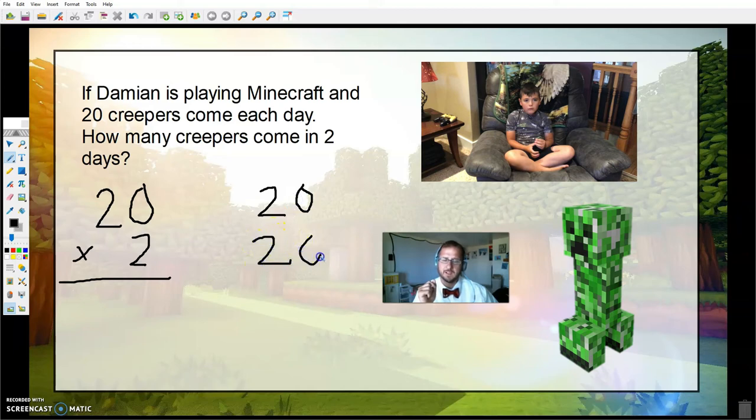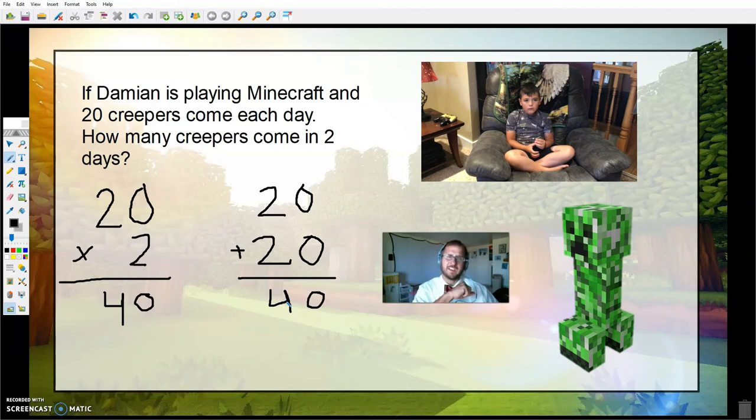We could do twenty multiply two, and because multiplication is also repeated addition, we could do one day of twenty and two days of twenty. And both of those are going to get us to the same answer. With the multiplication we're going to look at zero times two is zero, and then the two tens times two gives us four tens for an answer of forty. If we're doing the addition, zero add zero is zero and two add two is four. So Damien, if you were playing Minecraft and twenty creepers came per day, you would have forty creepers in two days. Thank you for that question.